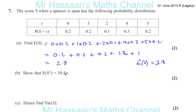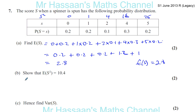Next, show that E(S²) equals 10.4. Basically you just take these values and square them. So you're going to put S² here — that's going to be 0, 1, 4, 16, and 25. And this time, that's what you multiply by — the probability that S is equal to each value.